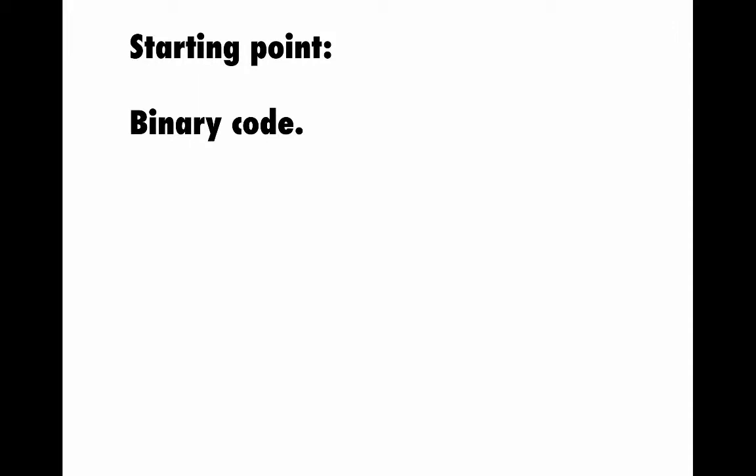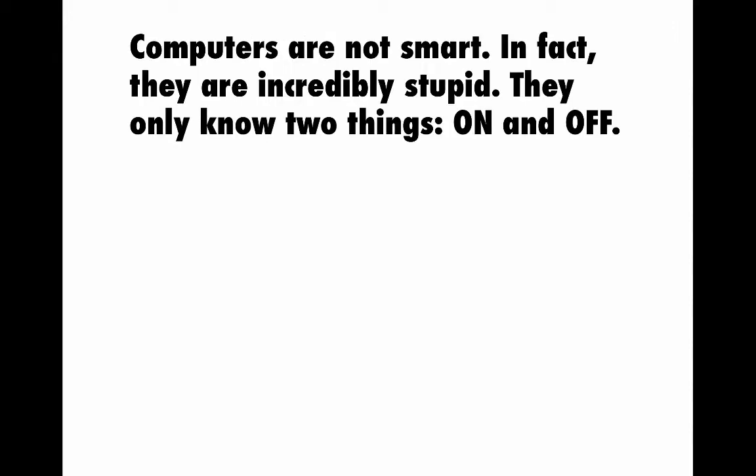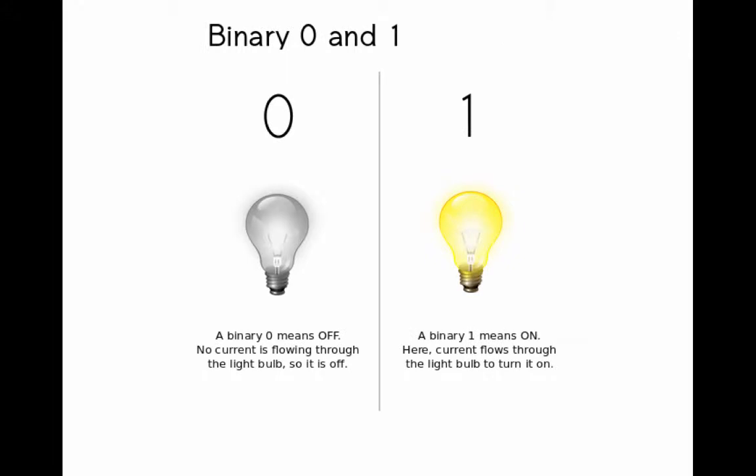Well, to explain that, we need to take an even further step back into the idea about binary code. So as we all probably know on some level, computers can do incredible things, but also computers are essentially kind of stupid in that everything that a computer does needs to be something you can express in terms of one of two states, on or off.